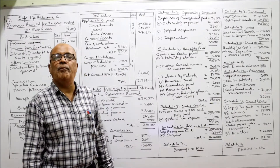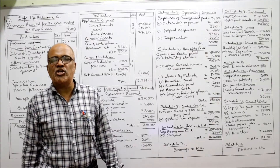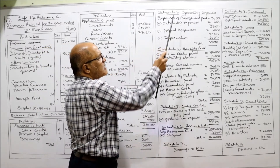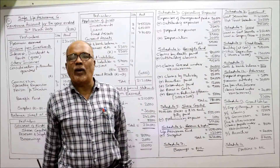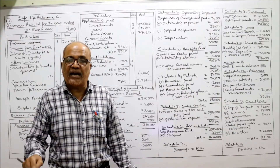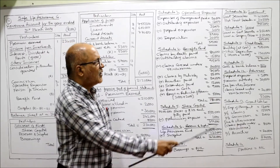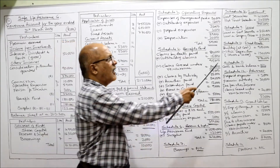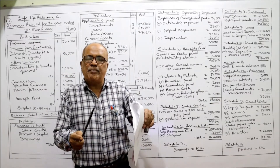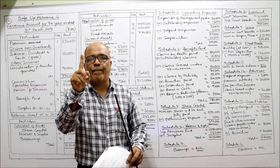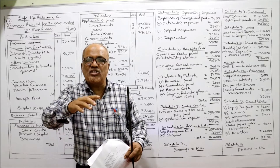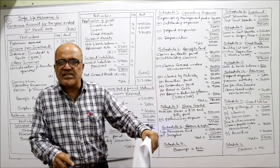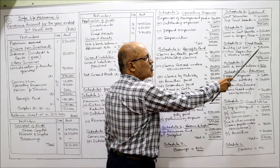Adjustment 7: provide 30,000 for depreciation on building. This 30,000 will have a double effect. First, depreciation 30,000 is taken as operating expenses in Schedule 3. Second, the 30,000 is deducted from building in Schedule 10, fixed assets. Building at cost nine lakh; accumulated depreciation from trial balance is one lakh; add further depreciation provided this year 30,000 — total accumulated depreciation one lakh thirty thousand. So net building value is seven lakh seventy thousand.